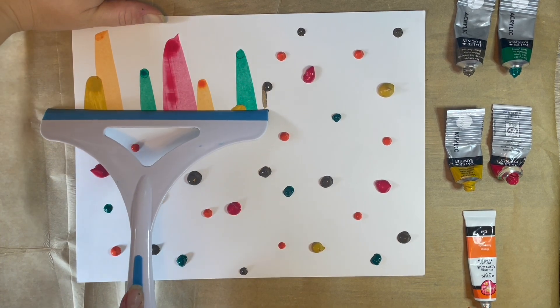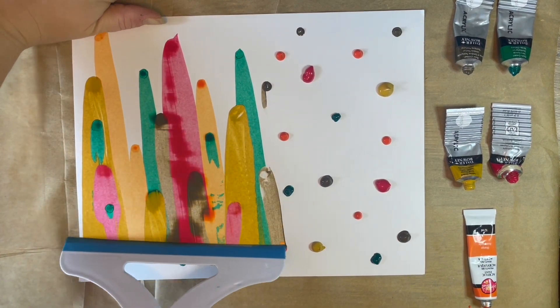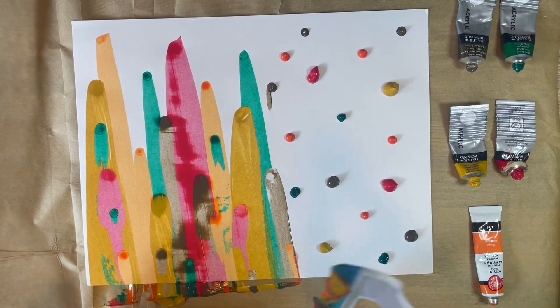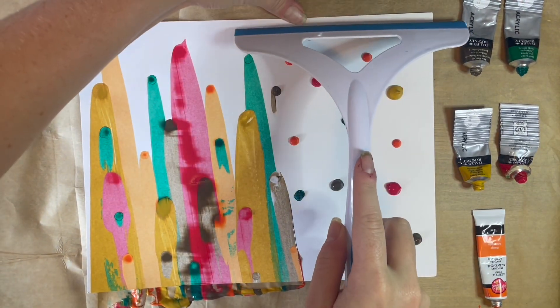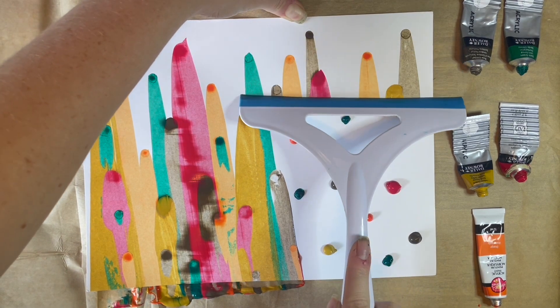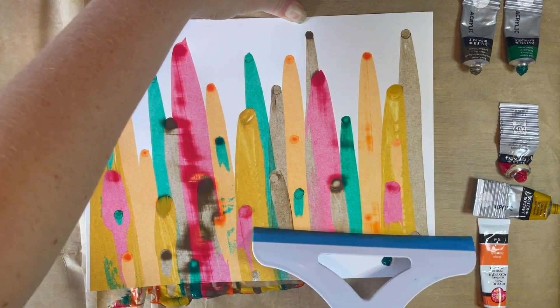You can see here, I wasn't exactly straight, but that's okay. Go ahead, wipe off your squeegee, and we're going to repeat again on the other side. Same process, pinch that down. With even pressure, drag your squeegee all the way over the page.